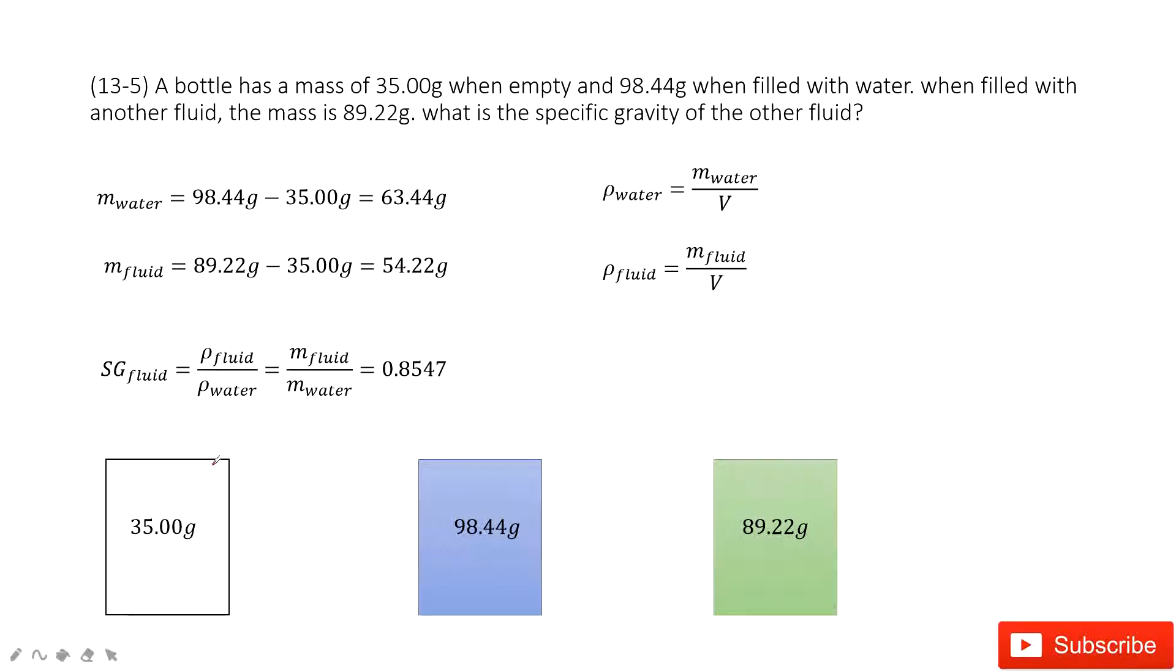So first we have the empty bottle. The mass is given there. And then this bottle is full with water. Another mass is given. So in this case we can get the mass of the water just use this number minus this number. Do you agree? Yes.